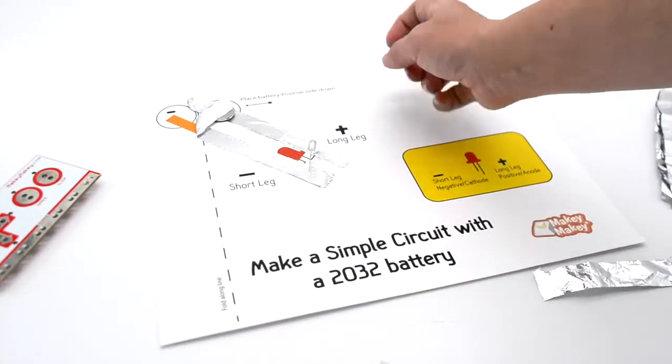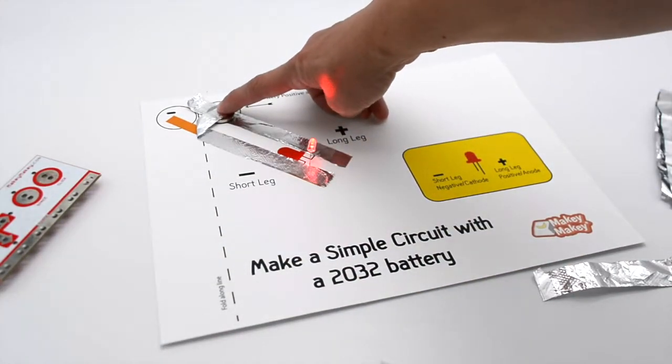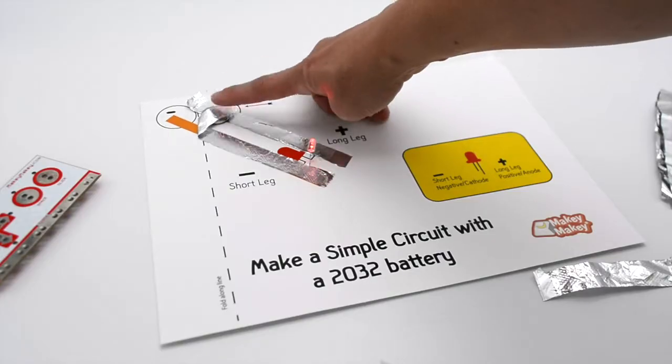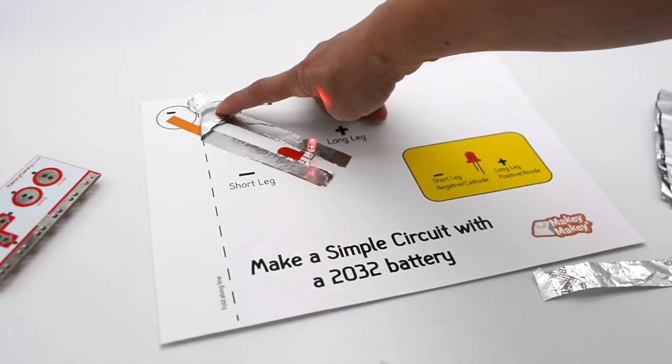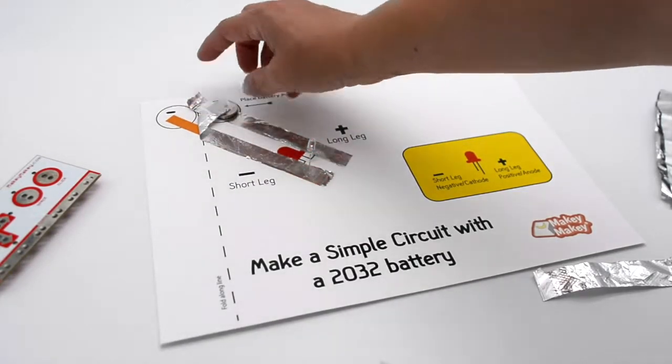Now we can see that our circuit is working. You can also see that if we put our foil across too far it will short the circuit if it touches the other. That's why it's kind of flickering and blinking.